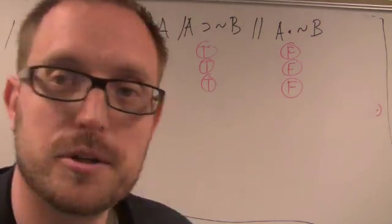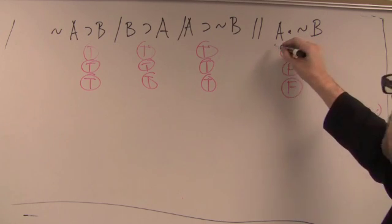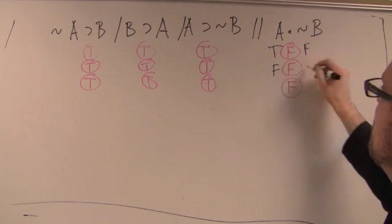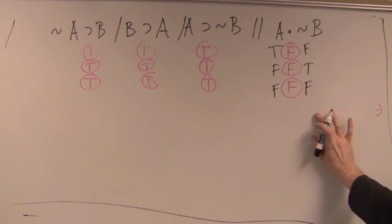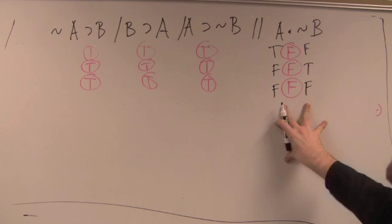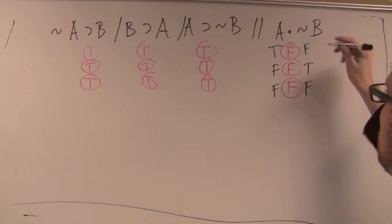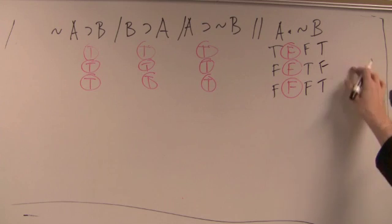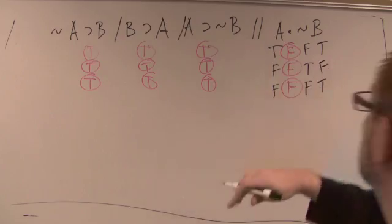So let's write it out. So again, always start with your conclusion. So the possible ways for A and not B to be false is if this is true and this is false, if this is false and this is true, or both of them are false. Because remember, the conjunction rule is that both terms have to be true. So now, this is a negation. We want to fill in our B, which is true, false, true. So we've got that in.